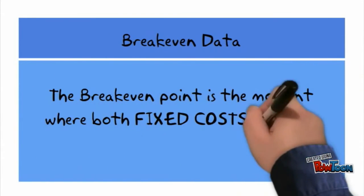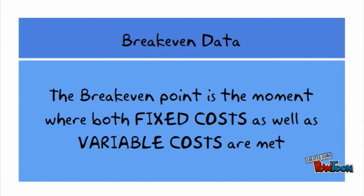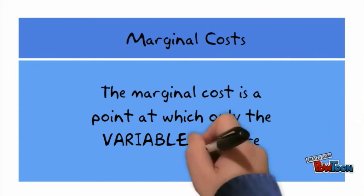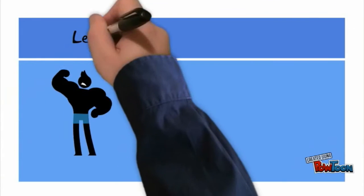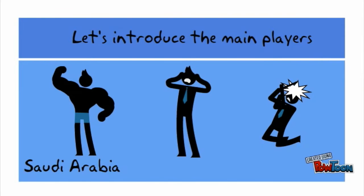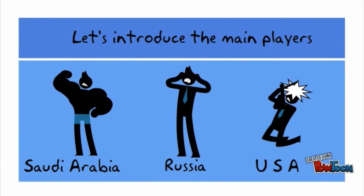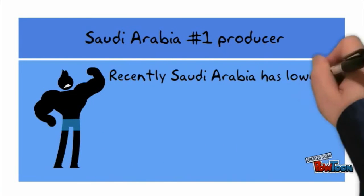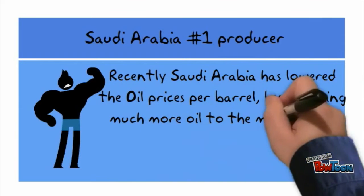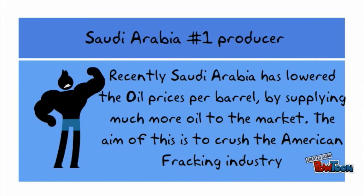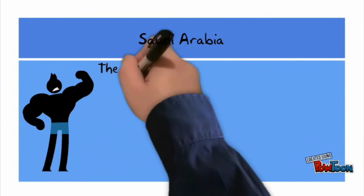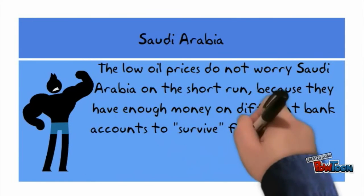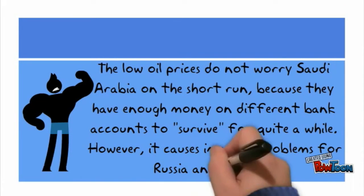The break-even point is the moment where both fixed costs as well as variable costs are met. The marginal cost is the point at which only the variable costs are met. Now let's introduce the main players: Saudi Arabia, Russia, and the USA. Saudi Arabia is the number one producer. Recently, Saudi Arabia has lowered the oil prices per barrel by supplying much more to the oil market. The aim of this was to crush the American fracking industry. This low oil price does not worry Saudi Arabia in the short run because they have enough money in different bank accounts to survive for quite a while. However, it causes immense problems for Russia and the USA.